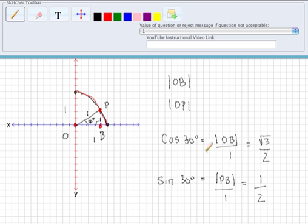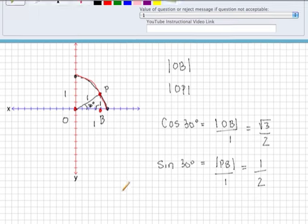So those are the lengths of those line segments. Then they would like us to take the point P and state what the x and y coordinates are.